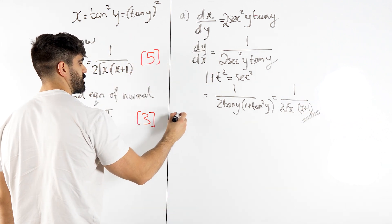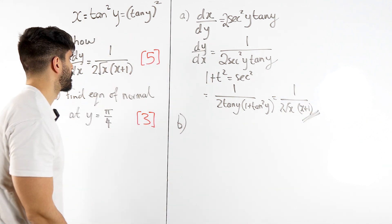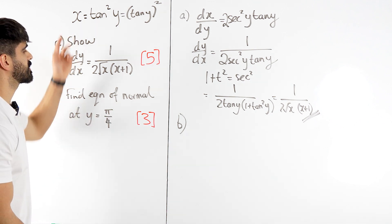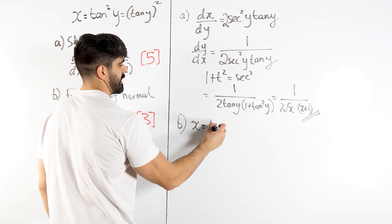And this is actually 5 marks. Part b. Find the equation the normal at y equals pi over 4. So we have the y value, we need the x value. So x is tan.